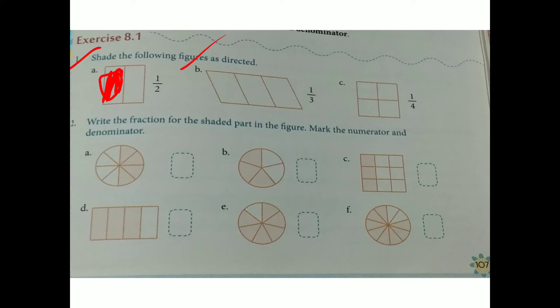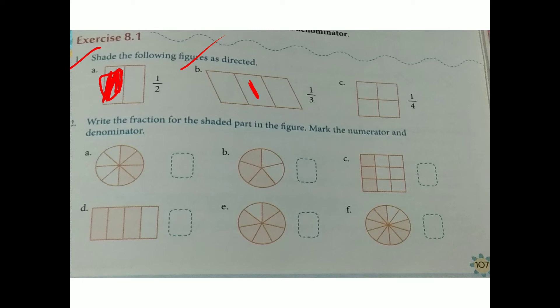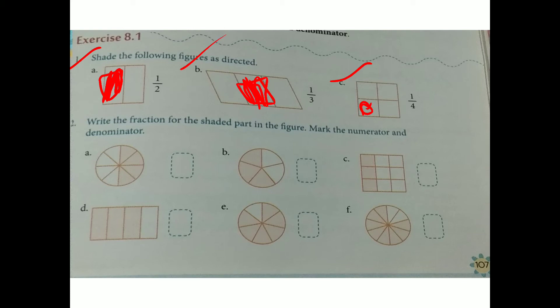Now we have to do one third. Total parts are one, two and three, and you have to shade one part. We shade one part the same way. Let's do one fourth. Total parts are one, two, three and four. You have to shade only one part. You can shade one part of the four parts. This is a very easy exercise; you can do this chapter too.